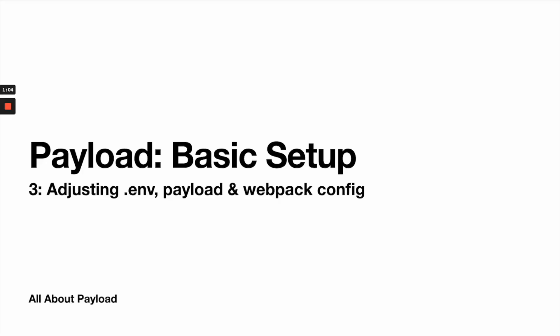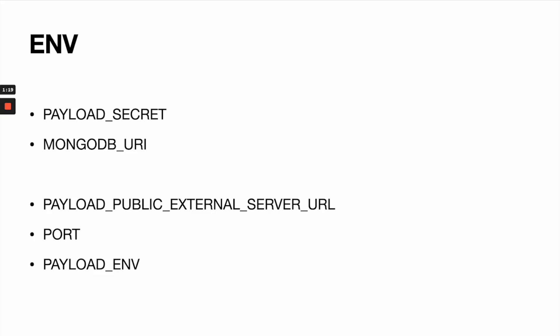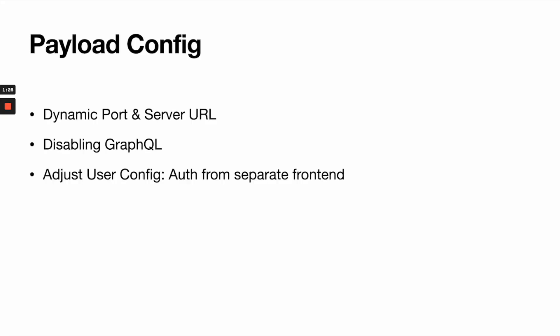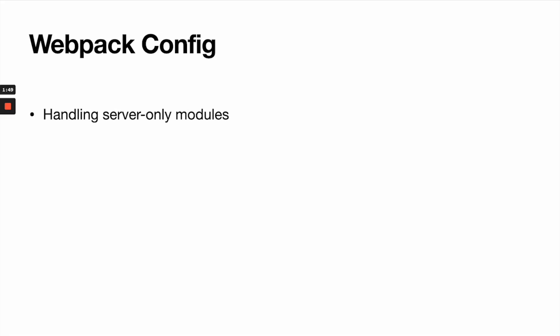Hey everyone, this is the third part of our Payload basic setup series. Today we'll be talking about adjusting our environment variables, adjusting our Payload and webpack config. In addition to the already existing two environment variables, we're going to add three more. After that, we're going to give our project a dynamic port and a dynamic server URL. We'll also disable GraphQL since we will not be using it, and I'm also going to show you how you can adjust the config of the users collection to support auth from a separate frontend. Last but not least, we will be talking about handling server-only modules like the fs module, which only works in Node environments and not in a frontend.